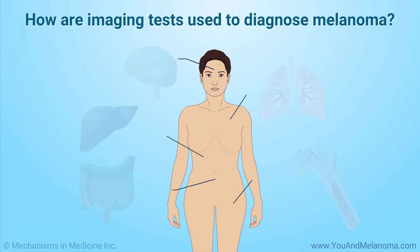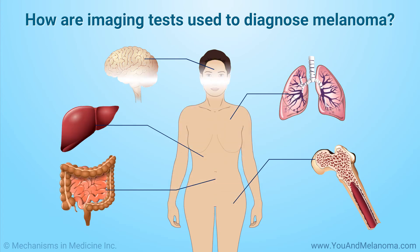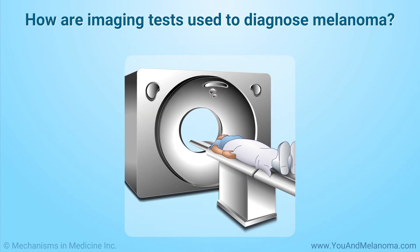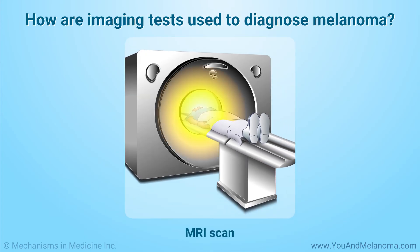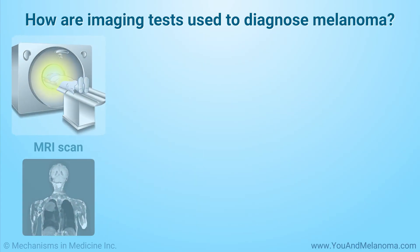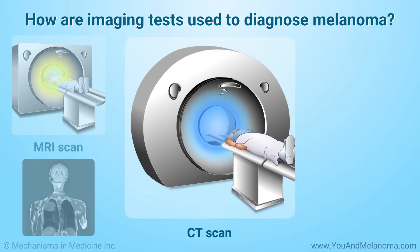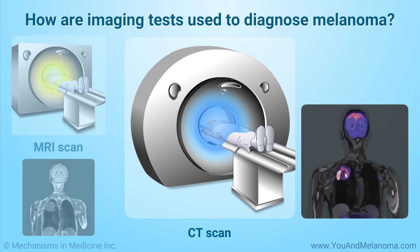Imaging tests may be done to look for cancer cells throughout the body. An MRI scan uses radio waves and magnets to create detailed pictures of areas inside the body. A CT scan uses a computer linked to an X-ray machine to make 3D pictures of areas inside the body.